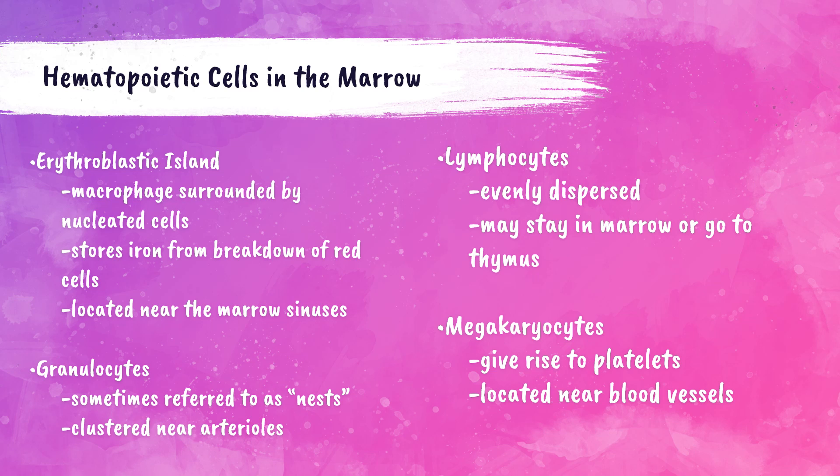Megakaryocytes are the cells responsible for the production of thrombocytes, also called platelets. The megakaryocytes are located near the blood vessels for easy release of platelets into the peripheral bloodstream. Platelets are part of the process of blood clotting when an injury occurs.